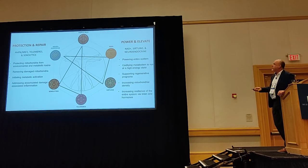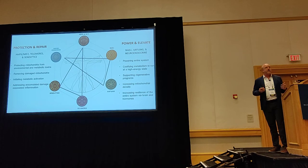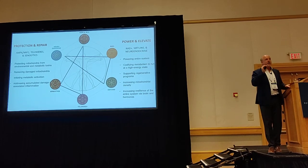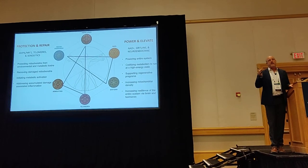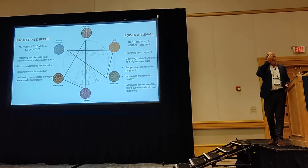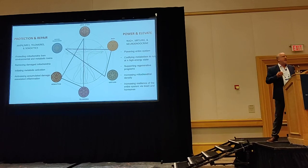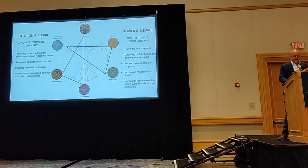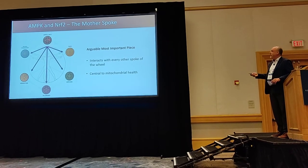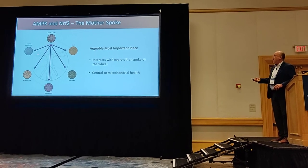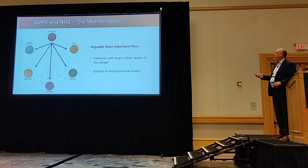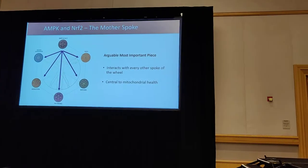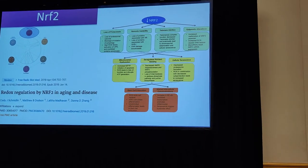You can look at this as two triangles: the protection and repair side — NRF2 and AMPK trying to keep everything clean — and then accumulated damage in the telomeres addressed by sirtuins. There's also the powering and elevating side: keeping NAD up, achieving sirtuin dominance, and maintaining a healthy neuroendocrine system. Neurotransmitter health and all the hormonal axes — HPA, HPT, HPG — are all tightly regulated by healthy mitochondria.